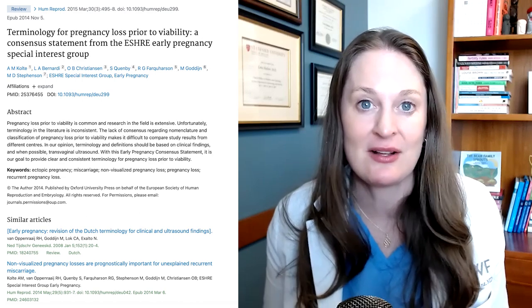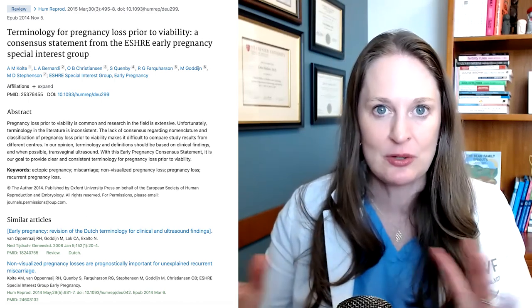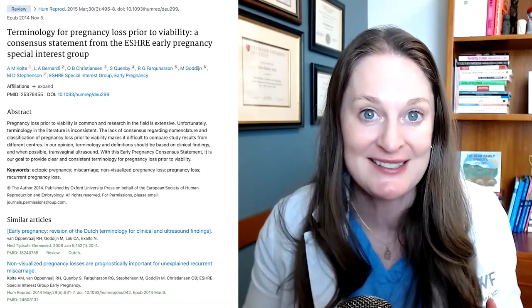The Royal College of Obstetrics and Gynecologists, the United Kingdom equivalent of ACOG, defines miscarriage as the spontaneous loss of pregnancy before viability, which they define as the time from conception to 24 weeks gestation. So these are all very similar, but yet slightly different medical terms for a miscarriage, and it's important to be very specific in understanding them.